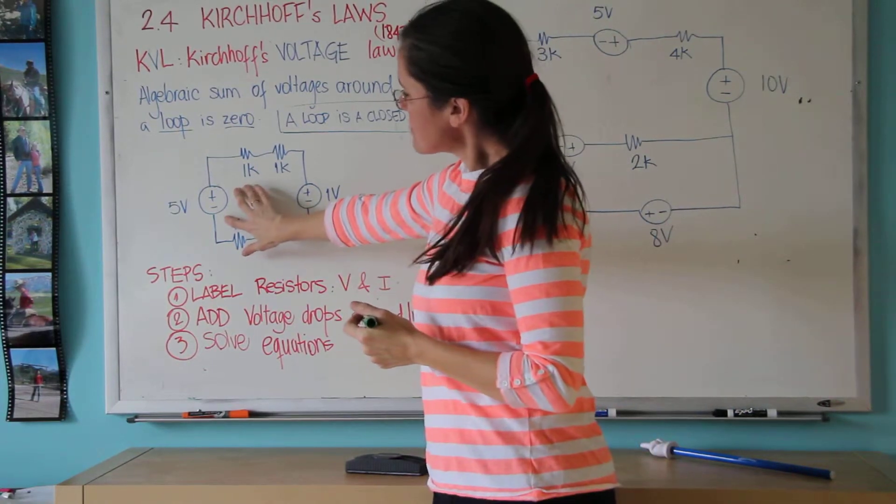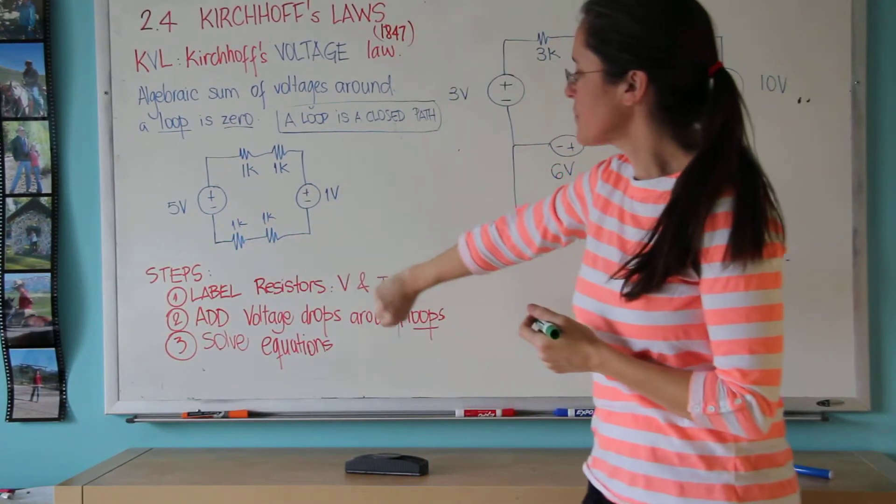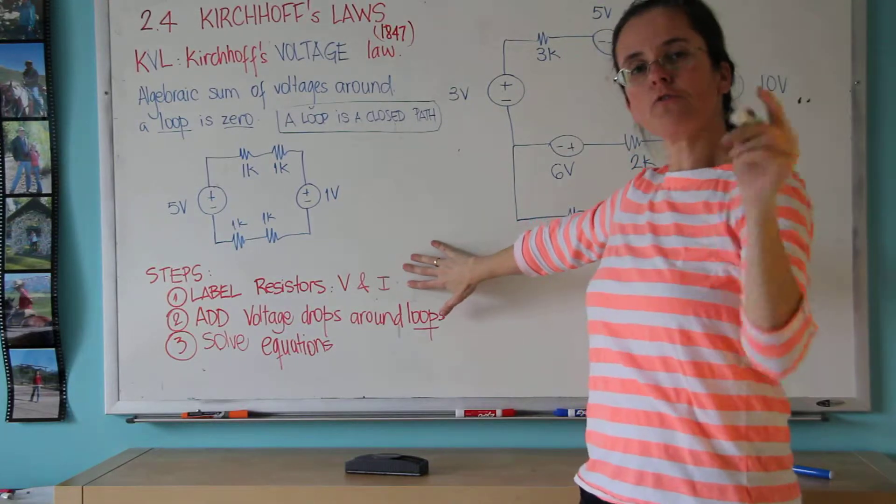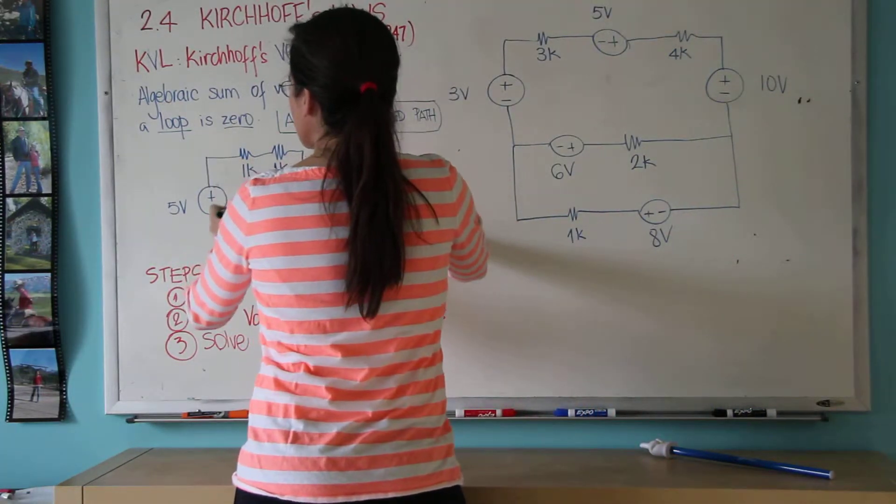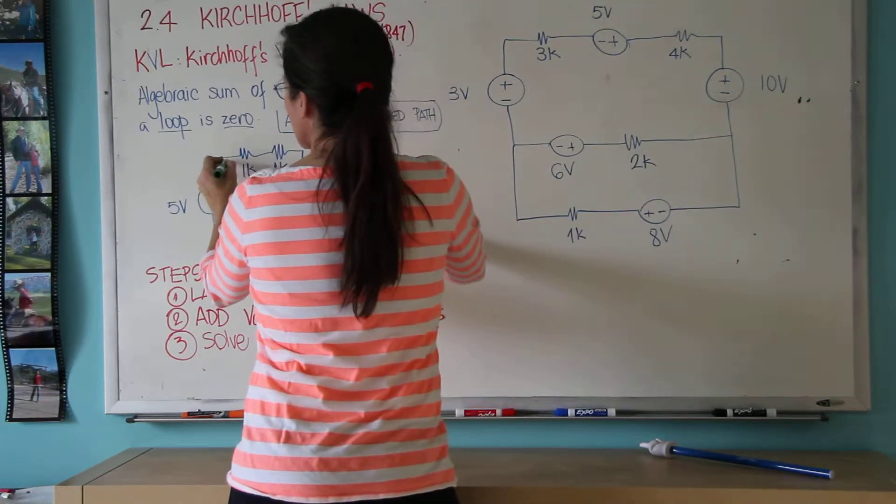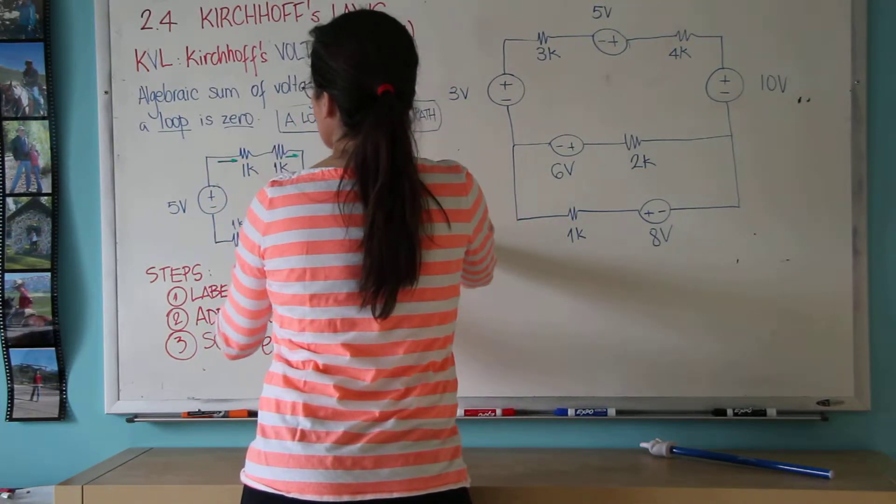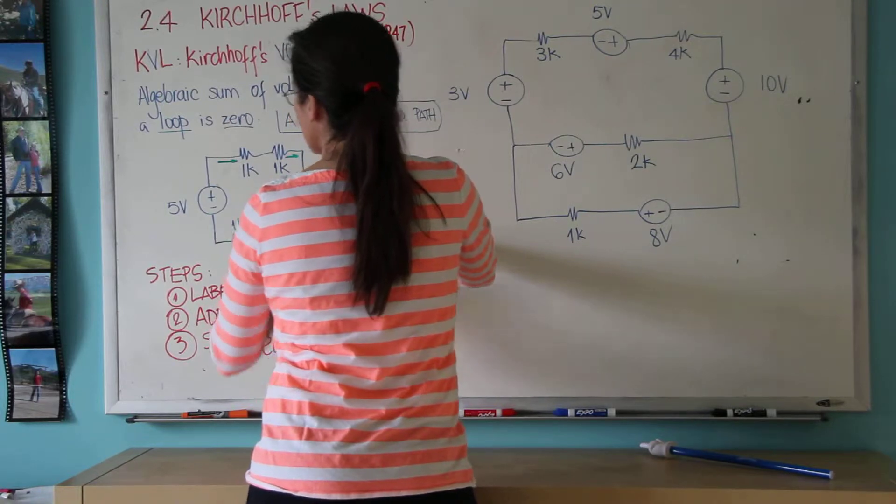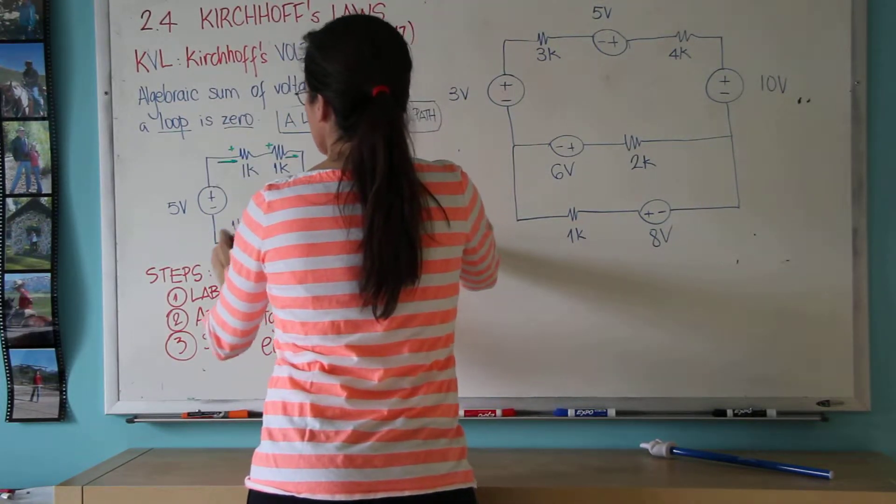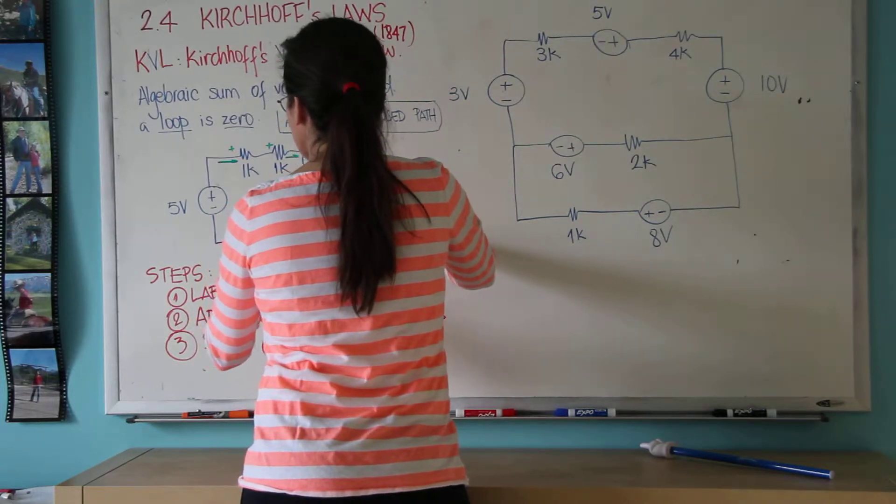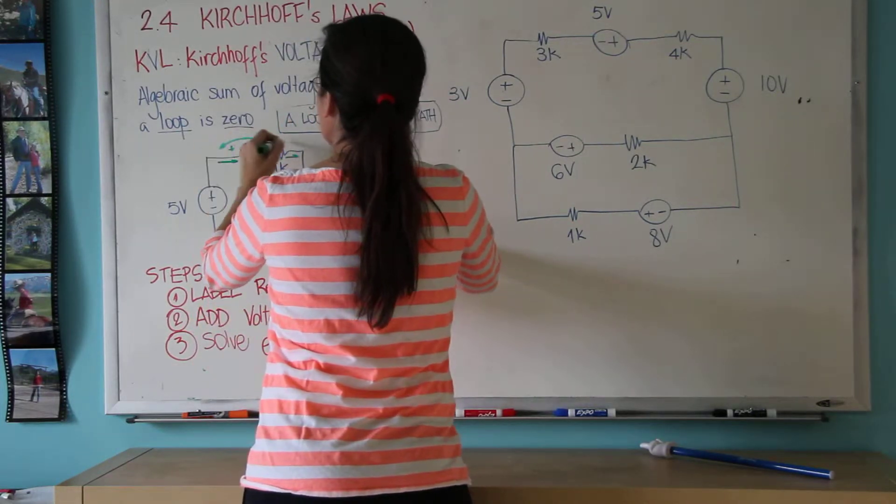So here, to solve circuits with it, I would prefer you to first label the resistors. In this case, I'm going to consider that this is the direction of the current, so I'm going to label here the currents going into the positive side of the resistors.